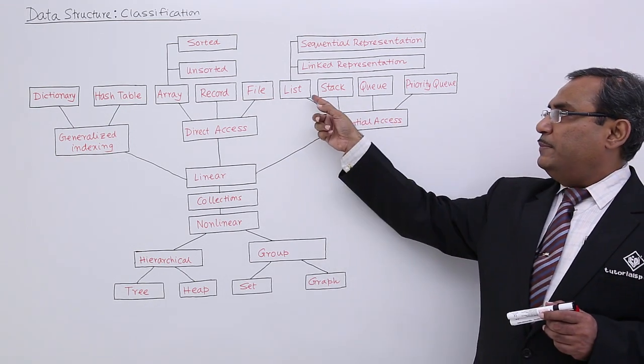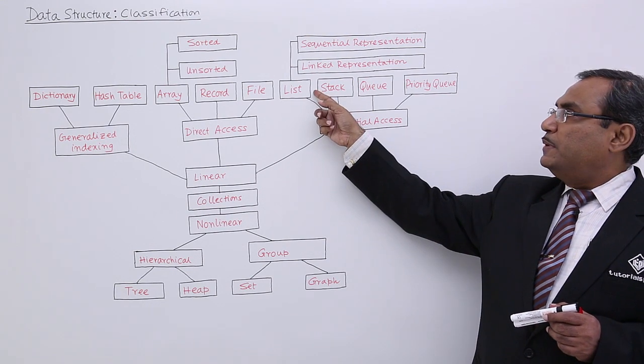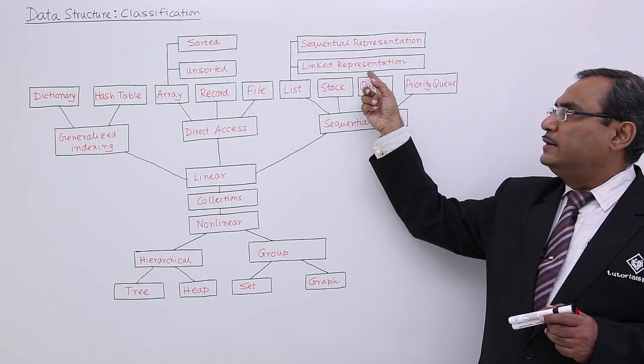Sequential access can be done on lists. Lists can be represented inside the computer's memory either as sequential representation or as linked representation.